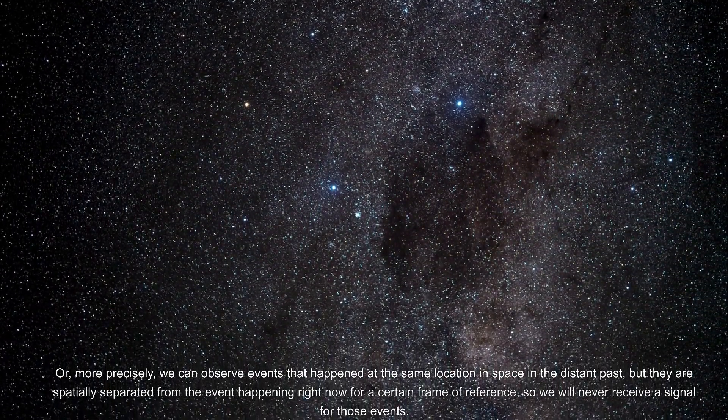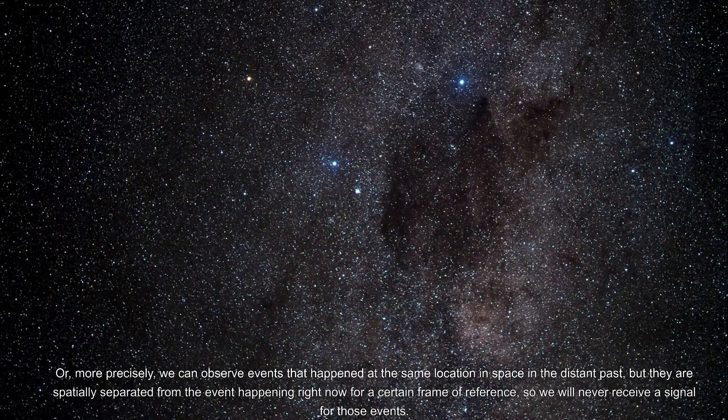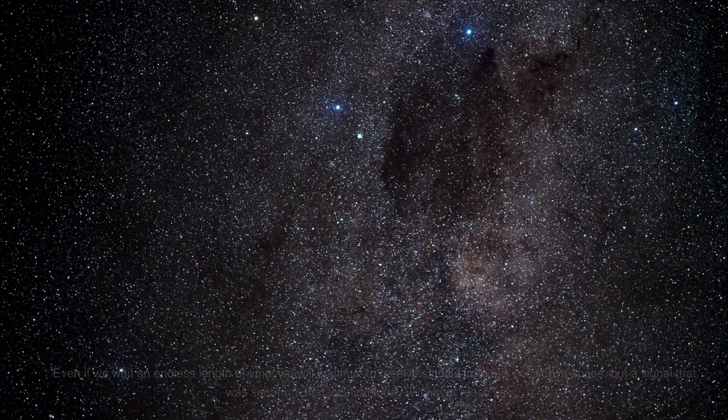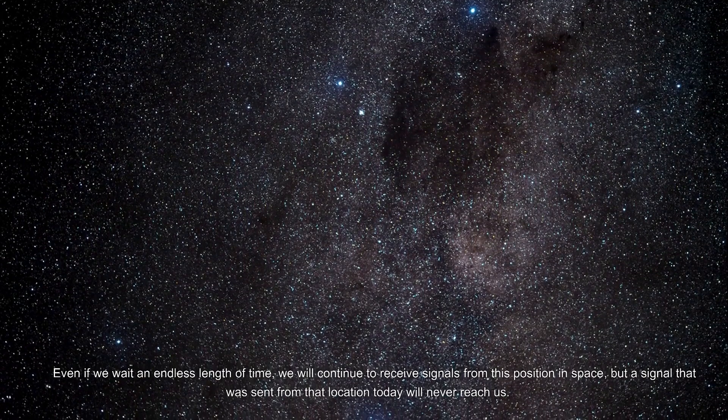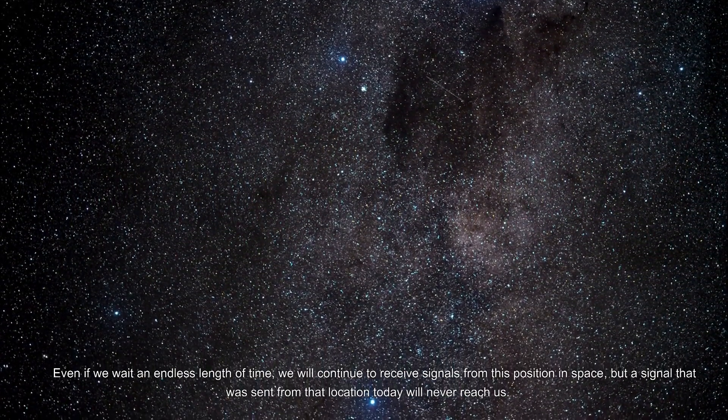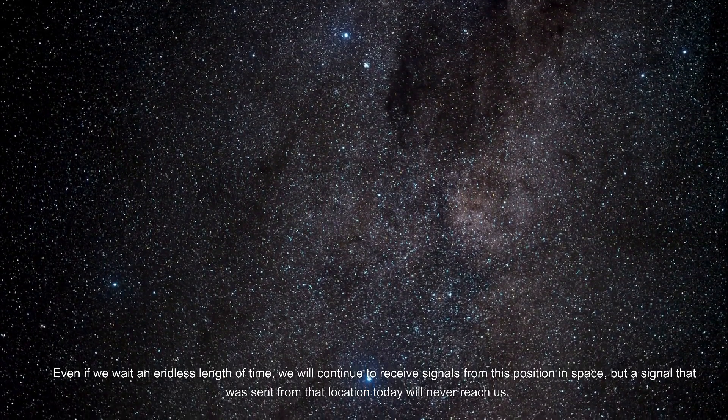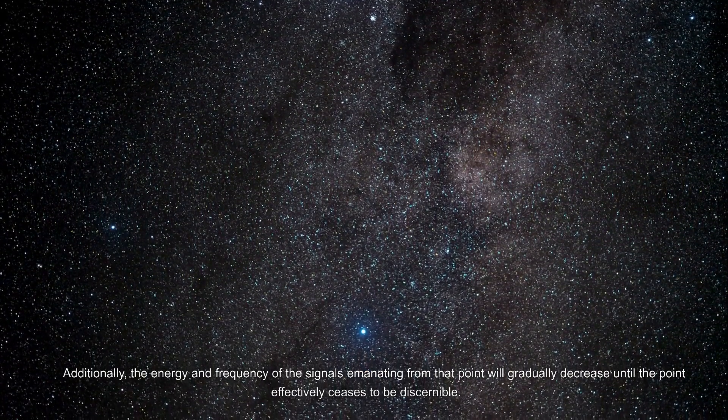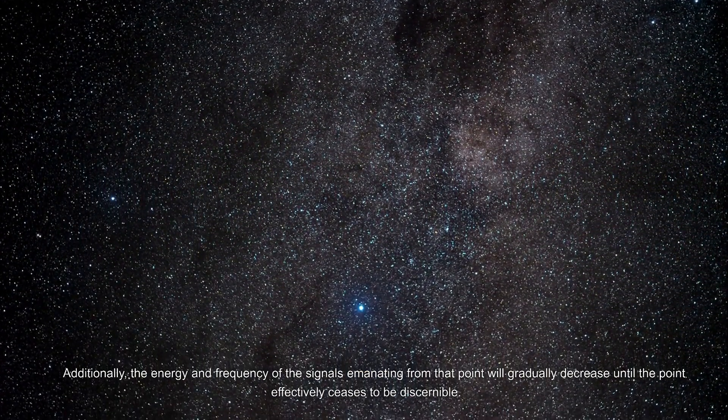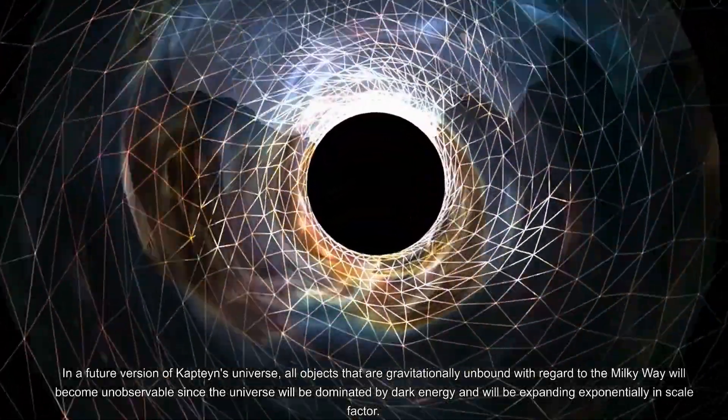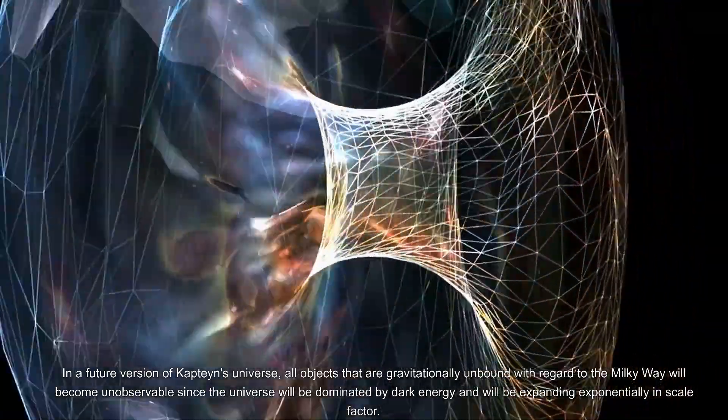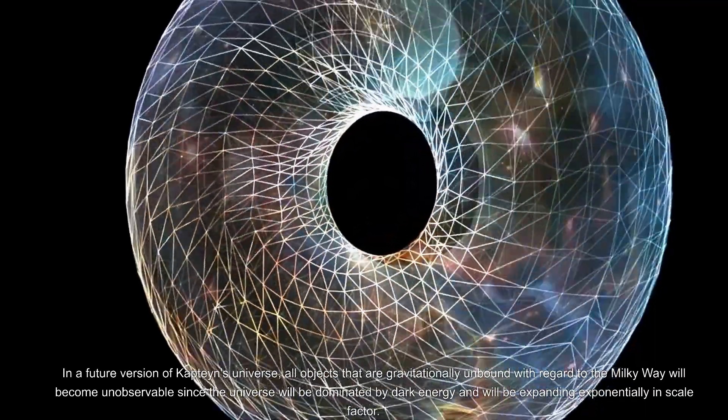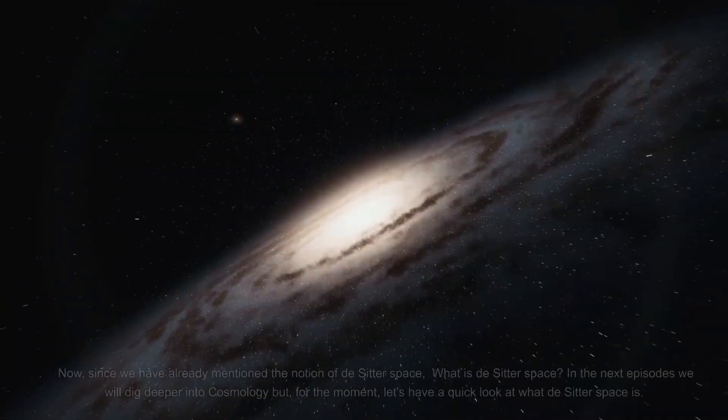More precisely, we can observe events that happened at the same location in space in the distant past, but they are spatially separated from the event happening right now for a certain frame of reference, so we will never receive a signal for those events. Even if we wait an endless length of time, we will continue to receive signals from this position in space, but a signal that was sent from that location today will never reach us. Additionally, the energy and frequency of the signals emanating from that point will gradually decrease until the point effectively ceases to be discernible. In a future version of the universe, all objects that are gravitationally unbound with regard to the Milky Way will become unobservable since the universe will be dominated by dark energy and will be expanding exponentially.